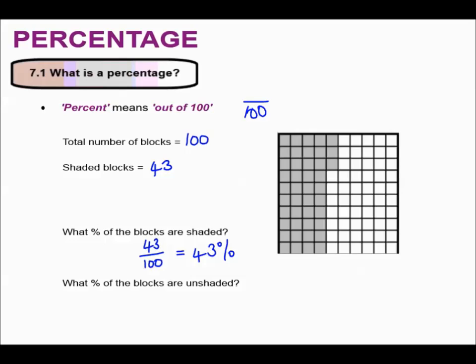What percentage of the blocks are unshaded? I know the blocks have got to add up to 100, so 43 plus what gives me 100? That would be 57 percent.